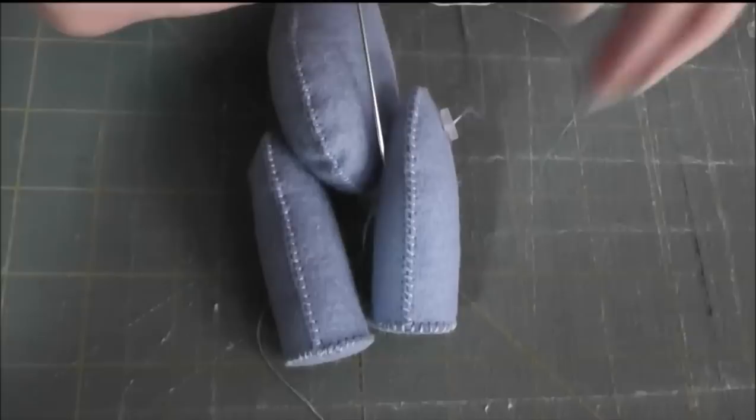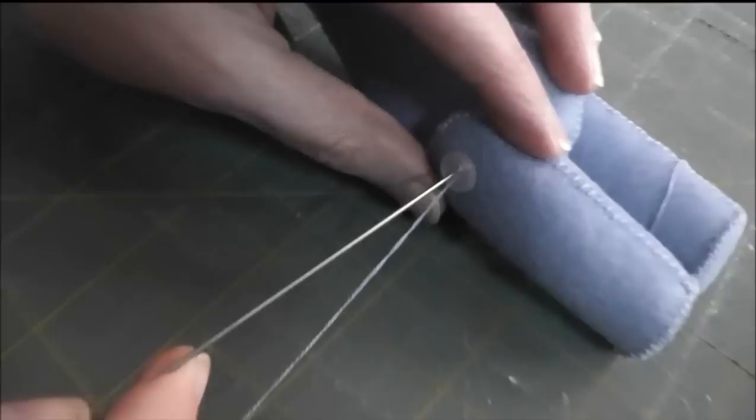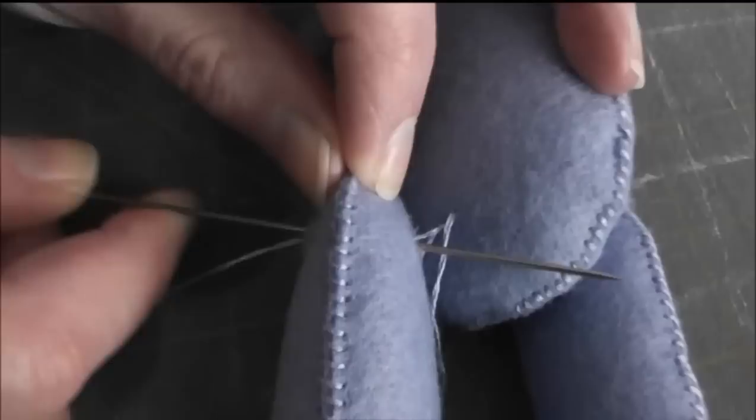And instead of going all the way back through the body I'm going to come out between this leg and this side of the body where my thread tail is. So I'm going to flip him over again so I can see what I'm doing. And I go in through the button, into the leg, and out in between the leg and the body. And I pull that up.